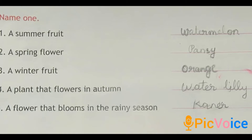Next, name one. First one — a summer fruit. What kind of fruits can we see in summer season? Yes, the fruits like mangoes, watermelon and muskmelon we can see in summer season. Here I wrote watermelon. Second one — a spring flower. Most plants bloom in spring season. Pansy, nine o'clock and malvee are some spring flowers. Here I wrote pansy. Third one — a winter fruit. Orange and fresh vegetables we can see more in winter season, so you can write orange.